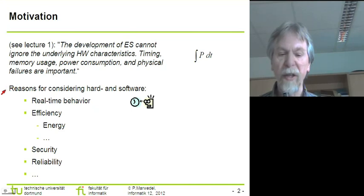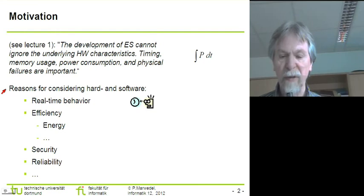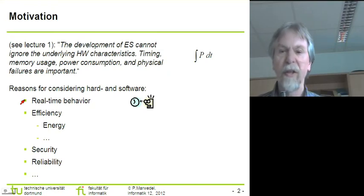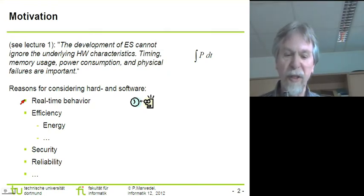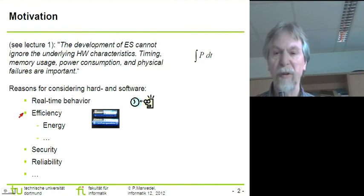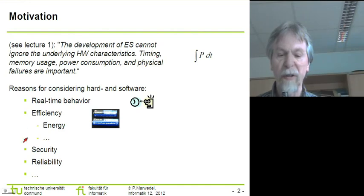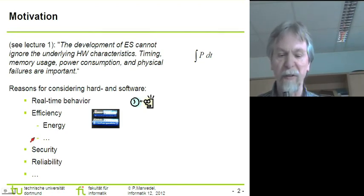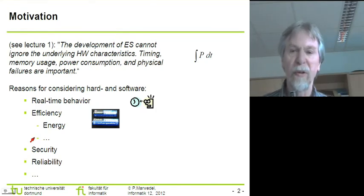The reasons are cited here. We need to consider real-time behavior — we have to make sure that our applications are completing computations in the amount of time that's available. Furthermore, we also have to look at energy efficiency as a special case of efficiency in general. We also have to make sure that we are using all the available processor cycles — something like runtime efficiency — and there were other types of efficiency mentioned in the very first lecture.